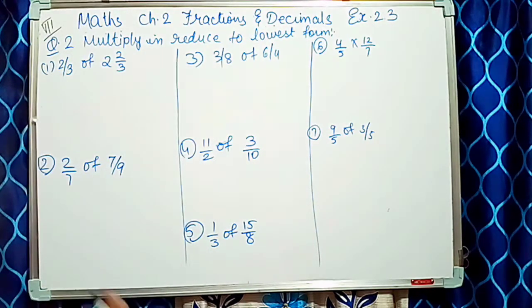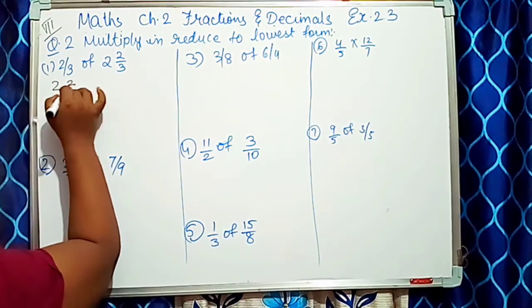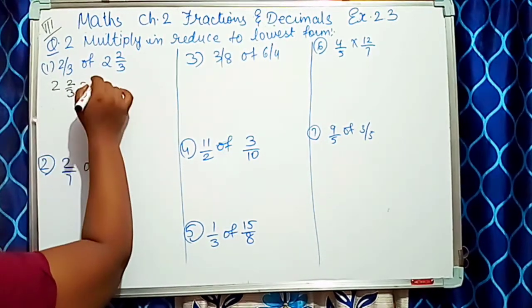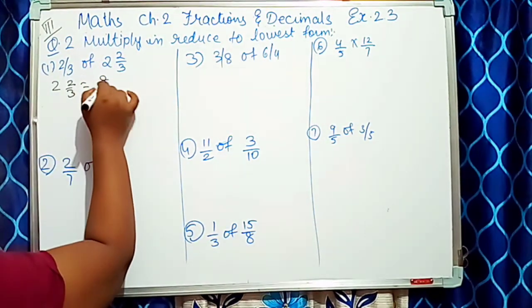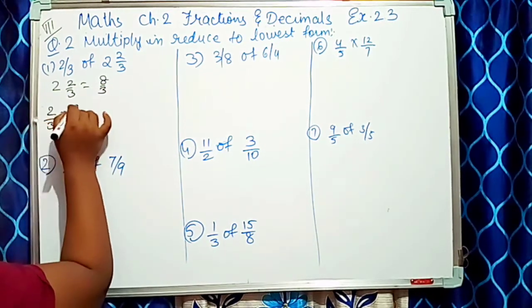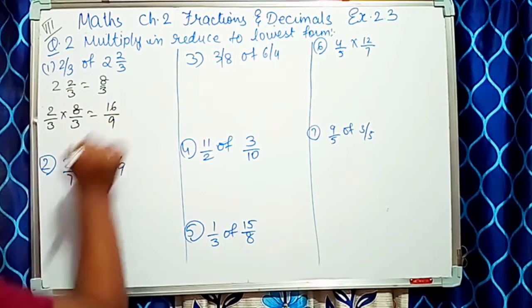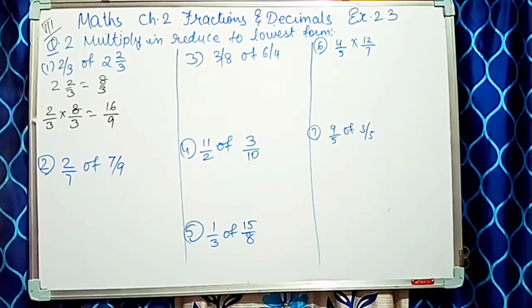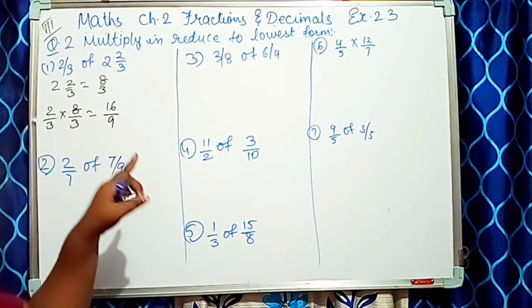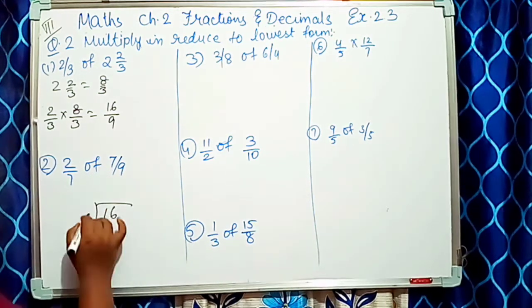Pehle yahan par dekho — mix fraction hai. Usko change karte hain: 2 2/3 ko improper fraction mein likhte hain — 3×2=6, 6+2=8, so 8/3. Ab 2/3 into 8/3 karte hain — 2×8=16 upon 3×3=9, so answer aaya 16/9.